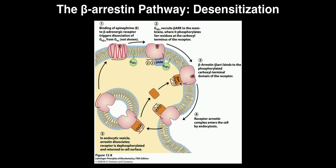Beta-arrestin forms a complex with the G protein-coupled receptor and, through a mechanism not fully shown here, facilitates endocytosis of this receptor into the cell. You can see the G protein-coupled receptors in the membrane being drawn into a vesicle. Once inside this vesicle, the beta-arrestin can dissociate, but what that effectively does is pull the receptor inside the cell.